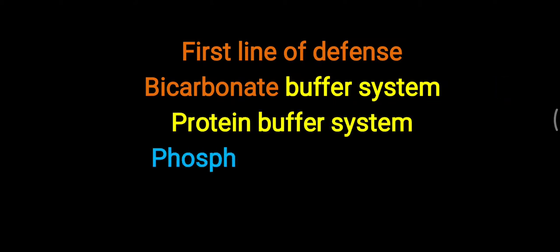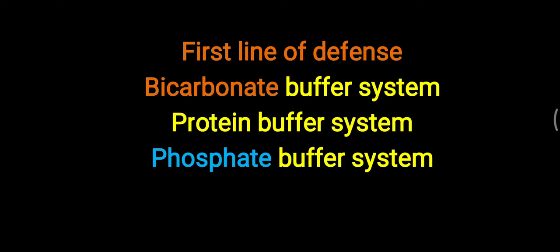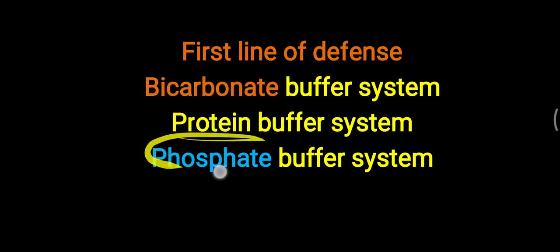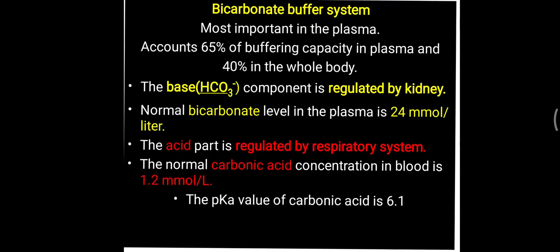Bicarbonate, protein, and phosphate — these three are the most important buffer systems and they are working as a first line of defense against any change in the pH of our tissue. This blood pH, as well as intracellular and extracellular pH, is maintained mostly with the help of these three buffer systems. The bicarbonate buffer system is the most important, particularly in the plasma, meaning inside the blood.